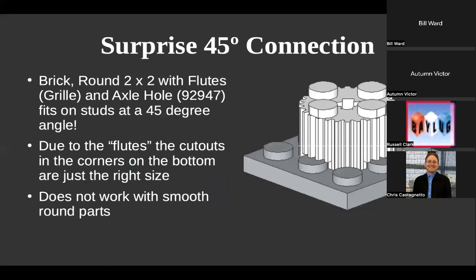Here's a surprise: if you take the 2×2 brick with fluted sides and place it at 45 degrees, it will actually fit over a stud and the cutouts will fit over the adjacent studs. It doesn't work on the regular 2×2 round, because the cutout on the regular one is a little bit smaller — it doesn't have room for a whole stud that way. But this gives a 45-degree axle connection relative to some studs, and 45-degree connections in LEGO are not easy to come by, so this is definitely worth noting.